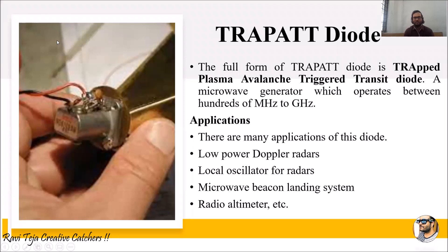The TRAPATT diode — full form: Trapped Plasma Avalanche Triggered Transit diode — is a microwave generator which operates between megahertz to gigahertz. Its applications include low power Doppler radars, local oscillators used for radars, microwave beacon landing systems, and radio altimeters.